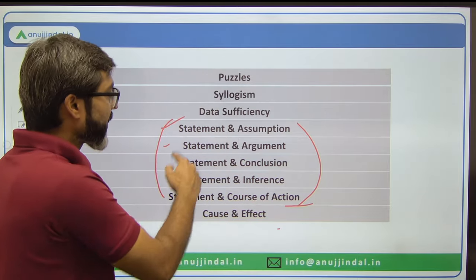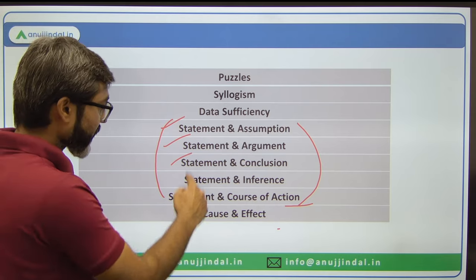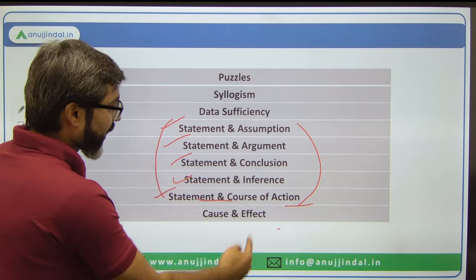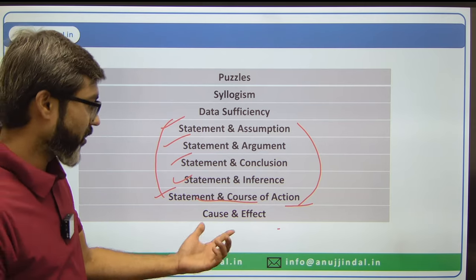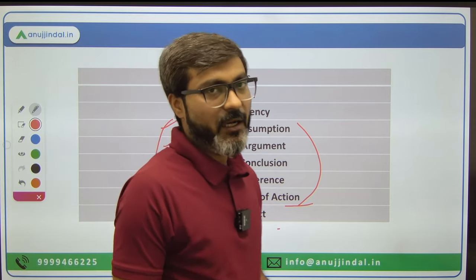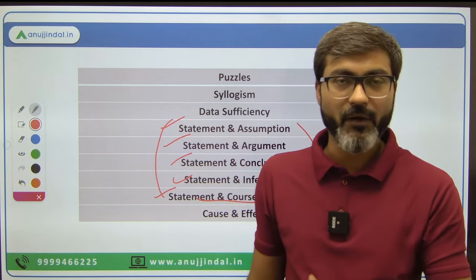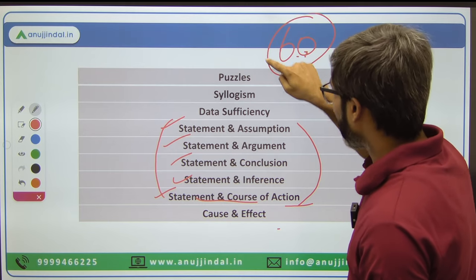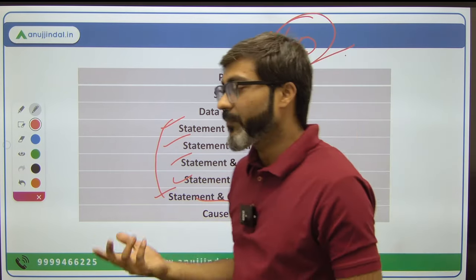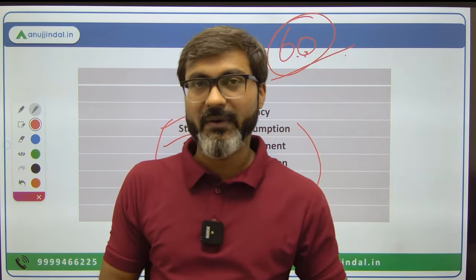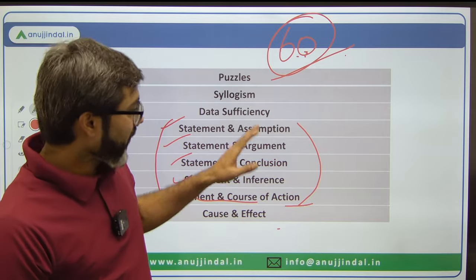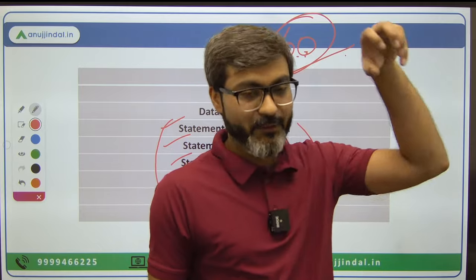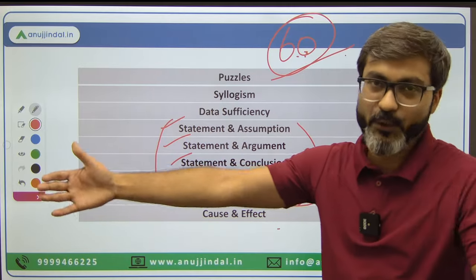For logical reasoning, you need to approach it carefully because what seems right to you may not be right according to the examiner — there are certain logics to solve such questions. Topics include: Statement and Assumption, Statement and Argument, Statement and Conclusion, Statement and Inference, Statement and Course of Action, and Cause and Effect. These are the topics for Reasoning. Reasoning has 60 questions, and you need to prioritize what to target in 45 minutes.